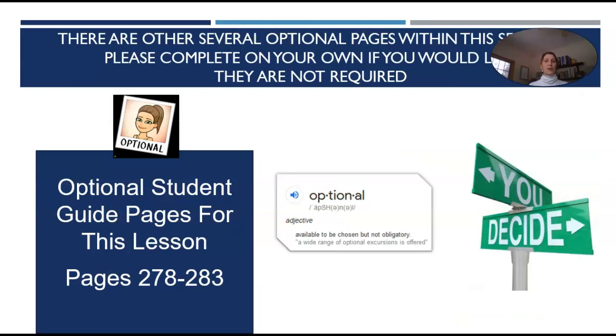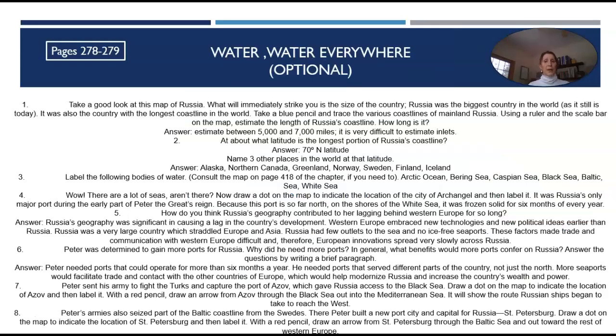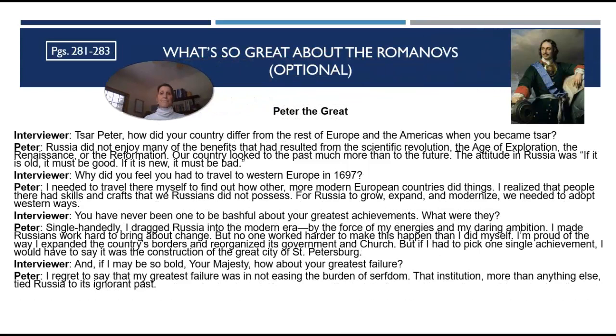There are several other optional pages within this lesson. You're not required to do them, but they are recommended. One is called Water, Water Everywhere — a mapping assignment in your student guide on pages 278 and 279. As you're watching this on your own, you can pause this video to fill in the answers, or you can look at the slides on the OMS. Another optional section is called What's So Great About the Romanovs, on pages 281 to 283. We are going to talk about this one during this flip video because it is important — you can just listen or fill in.